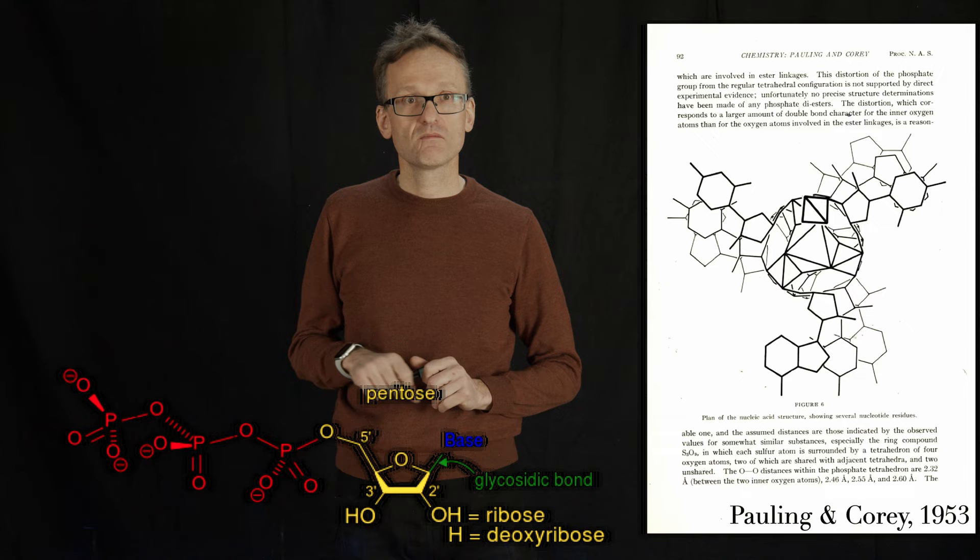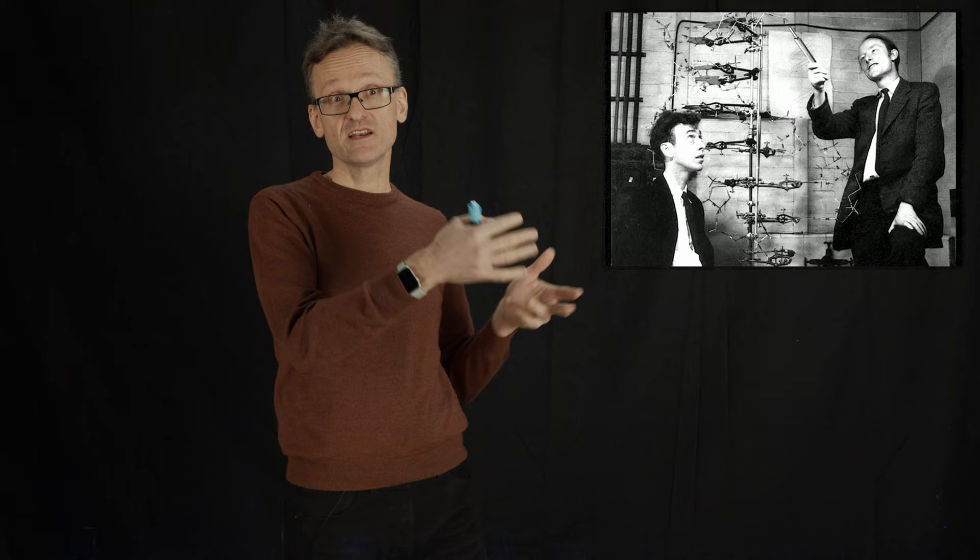So what Watson and Crick did is that they realized that pairing is going to work great if you had a model where bases bind pairwise to each other. And if bases are going to bind pairwise to each other they need to face each other, and that would require you to turn the phosphates outwards. Which is pretty much how they came up with the idea of this double helix.